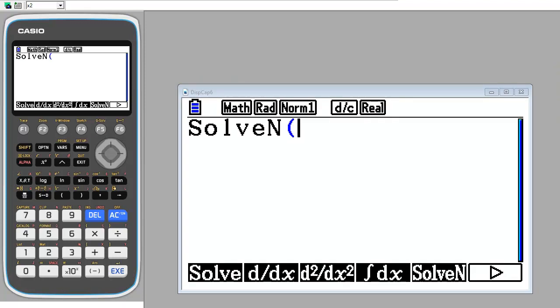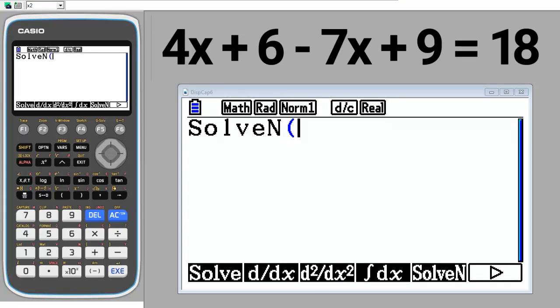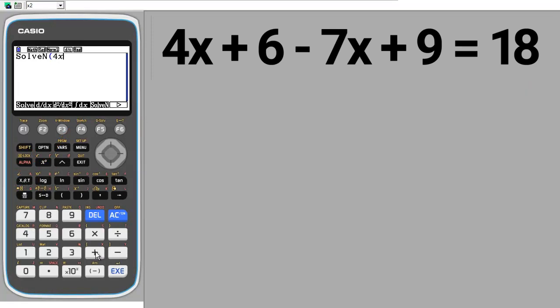We are ready to enter our equation. This is the first equation. Enter it just like you see it here. 4, x, the x button is here, plus 6, minus 7, x, plus 9, equals. To get the equals sign, press the Shift button, then this decimal point button. 18.